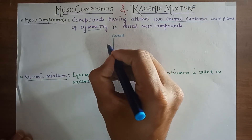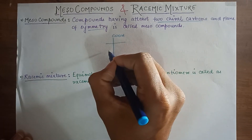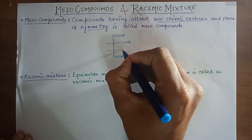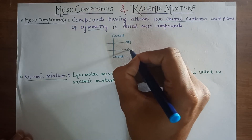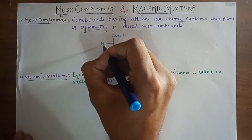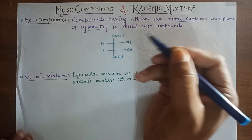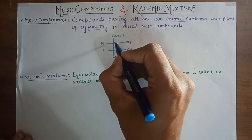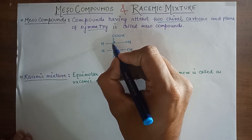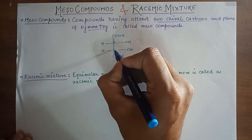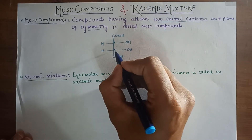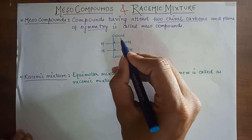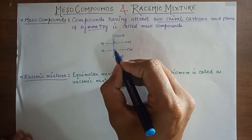The structure of tartaric acid has COOH, COOH, with OH and H groups on each chiral carbon. So there are two chiral carbons — one carbon is chiral as four groups are different, and the other carbon is also a chiral carbon with four different groups. So two chiral carbons are present.